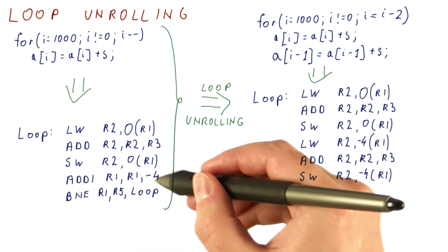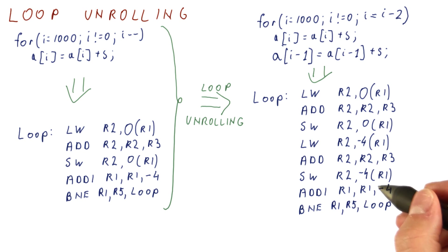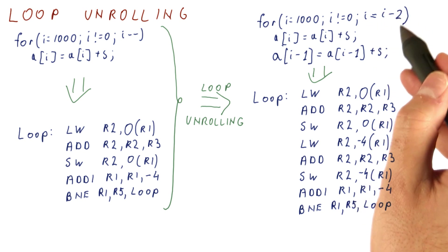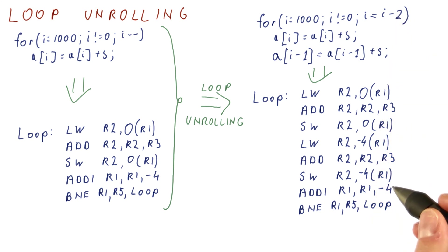And now we need our loop counter update and the actual loop back branch. But those we cannot simply copy. Just like here, we had to update the counter to count by two iterations. In this code, we were decrementing r1 to move to the element below. Now we are processing two elements at a time, so we need to move eight bytes at a time.